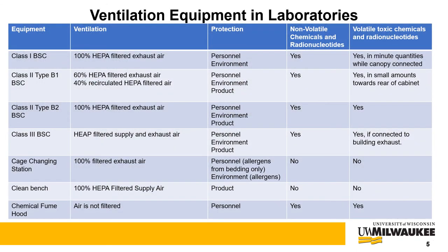There are three types of biosafety cabinets available: Class 1, Class 2, and Class 3. Class 1 and Class 2 biosafety cabinets have open fronts and provide protection to personnel and the environment when used properly. Class 2 biosafety cabinets also provide protection from the environment for cultures being handled in the cabinets. Class 3 biosafety cabinets are gas tight and have the highest level of protection.